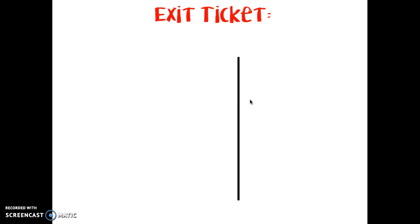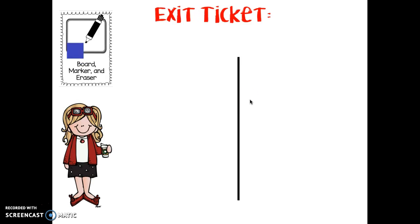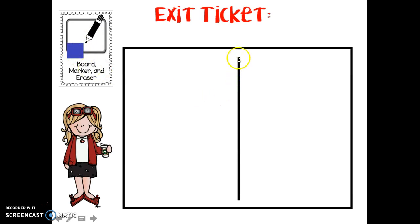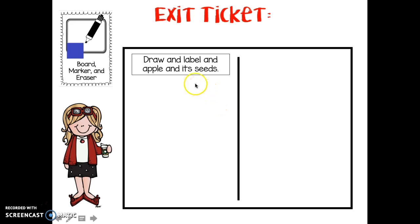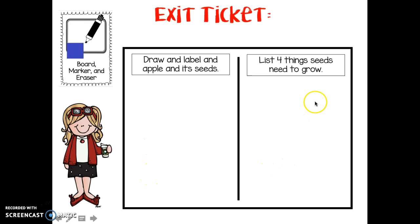Let's show off what you know — here's your exit ticket. You and your buddy each need your own board, marker, and eraser. Draw a line down the middle of your board. On one side, draw and label an apple and its seeds — remember you can use your text and photograph evidence to help you. On the other side, list the four things seeds need to grow. Go back in the text and find it — and spell those words correctly! Take a picture of your board and SeeSaw it to your teacher. Great job today!